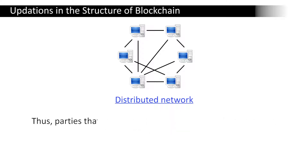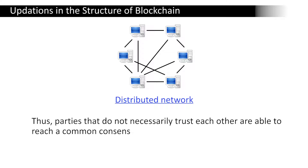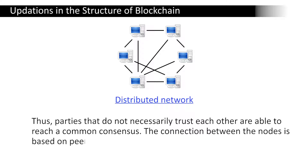Thus, parties that do not necessarily trust each other are able to reach a common consensus. The connection between nodes is based on a peer-to-peer network. In summary, blockchain is a decentralized and distributed ledger — which may be private or public — of different kinds of transactions, with a peer-to-peer network. There are two vital data structures used in blockchain: pointers and linked lists.